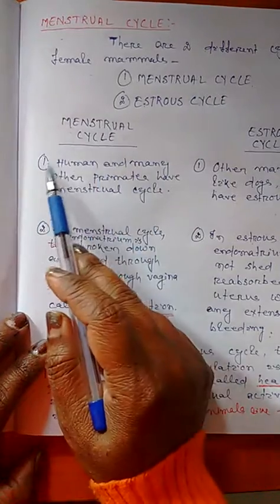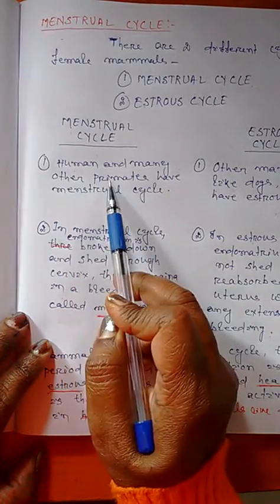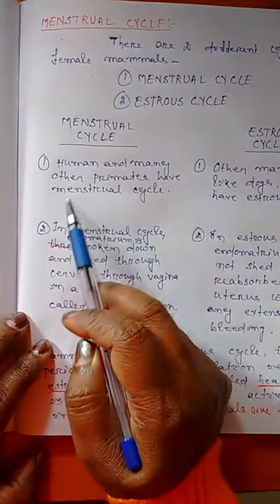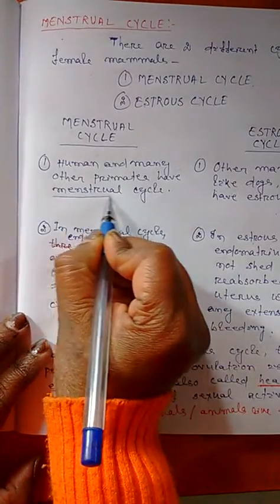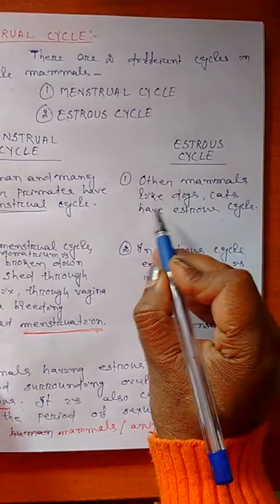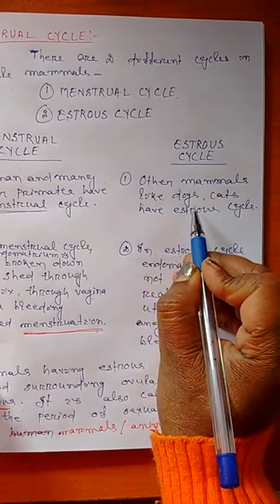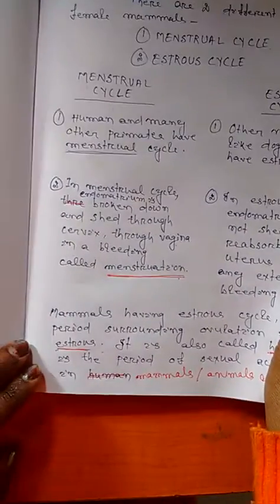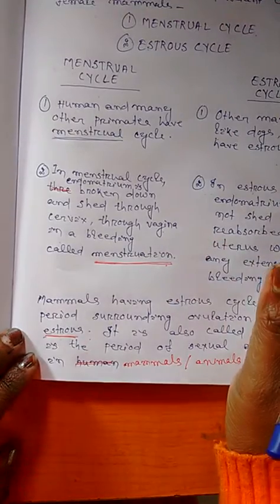First, the menstrual cycle. Humans and many other primates like monkeys and apes have menstrual cycles. But other mammals like dogs and cats have estrous cycles. The major events that occur in the menstrual cycle...